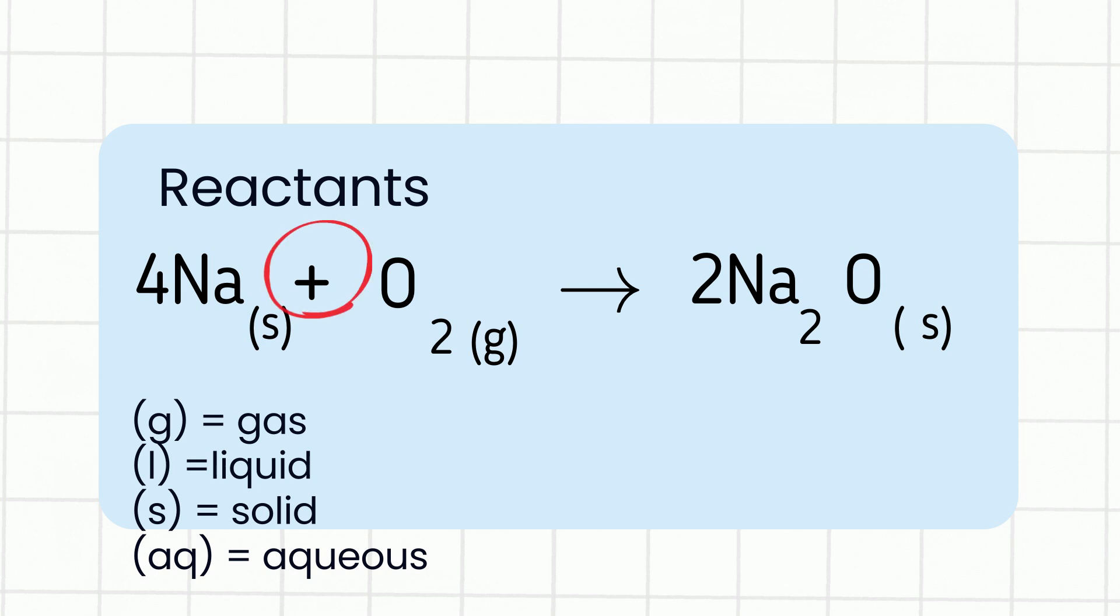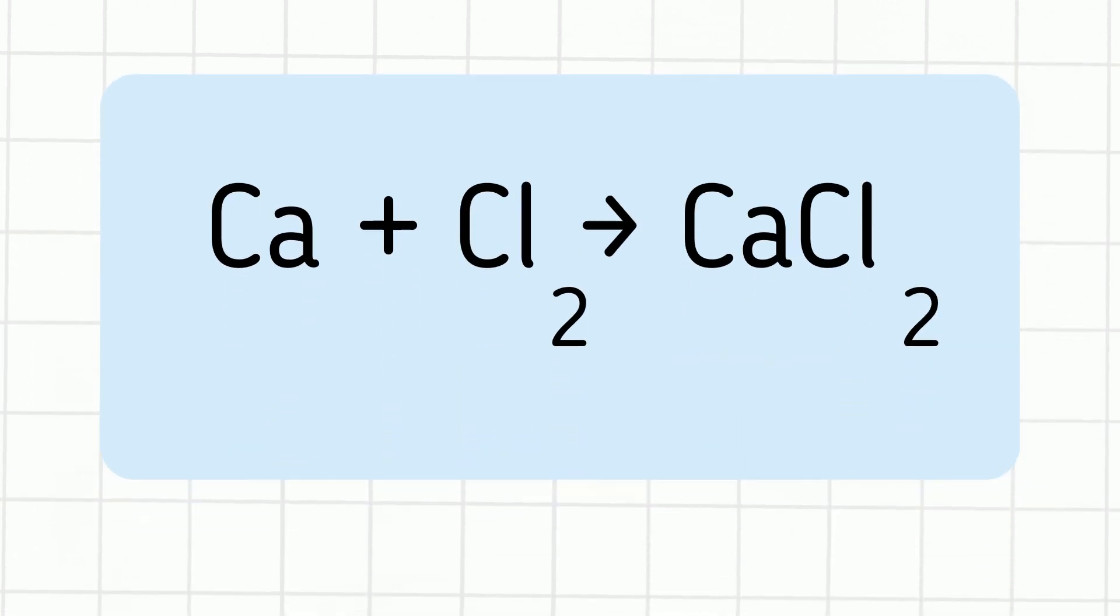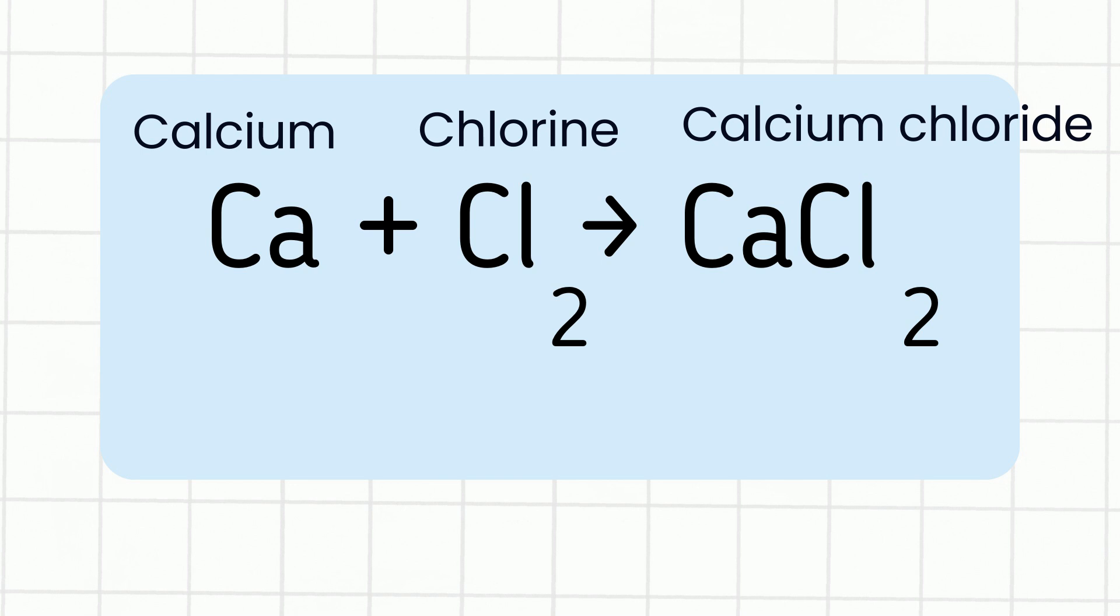The plus sign tells you that you have more than one reactant or product. Equations must also be balanced, which means you will have an equal number of atoms on both sides of the equation. For example, consider this simple chemical reaction. Calcium plus chlorine yields calcium chloride. Notice that you have one calcium and two chlorine atoms on the left, and then the same numbers on the right, so it's balanced.